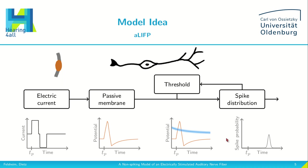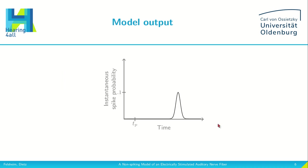Let's have a closer look at the output of our model. In each time step we can get the instantaneous spike probability, which would be, for example, 0.1. We can then also integrate over all these instantaneous probabilities to get a total spiking probability. The output also shows us the latency and the jitter.